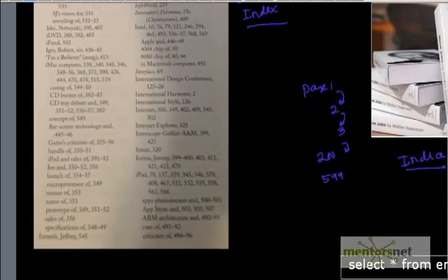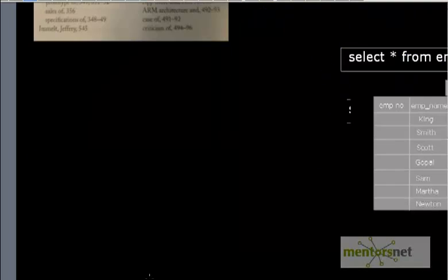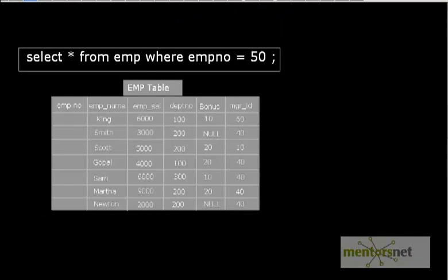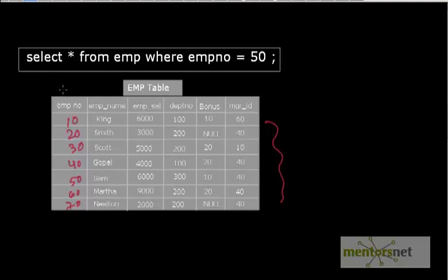Now let's come back to the problem we face in Oracle. Let's say we have an employee table with 7 rows — employee numbers 10, 20, 30, 40, 50, 60, and 70. The question is: can you find the employee record for employee number 50?